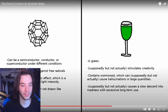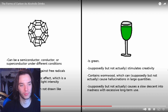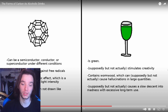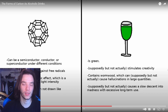Sam lists fullerene properties: can be a semiconductor, conductor, or superconductor under different conditions; can be used to protect against free radicals; displays the photochromic effect; looks like soccer balls; supposedly green, stimulates creativity, contains wormwood which supposedly causes hallucinations, and supposedly causes slow descent into madness with excessive long-term use. Host: 'So what I'm hearing is that Salmonella drinks absinthe.'